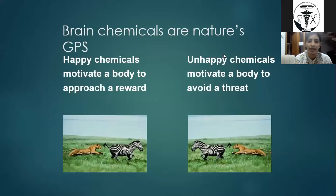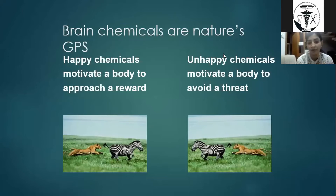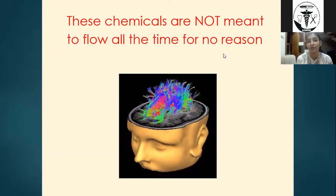Brain chemicals are nature's global positioning system. You need happy chemicals to motivate you to reach a reward, and unhappy chemicals to help you run away from danger. In the picture, a lion is chasing a zebra — happy chemicals are high in the lion because it anticipates a reward, while stress hormones are at their peak in the zebra. These feel-good chemicals are not meant to flow all the time; they are released at specific times.